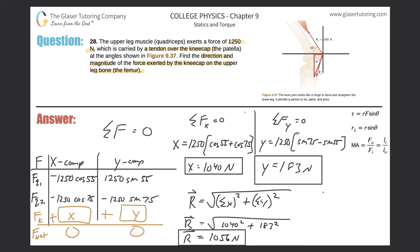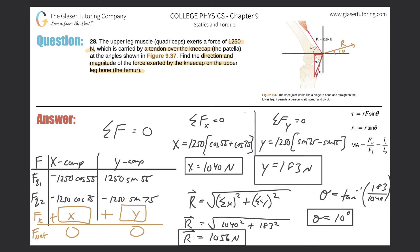For the direction, we need to find the angle. The formula is the inverse tangent of y over x. The y-value is 183 and x is 1040, so theta equals inverse tangent of (183 over 1040), which gives approximately 10 degrees. The resultant force is 10 degrees from the horizontal, and the resultant value is 1056 newtons.